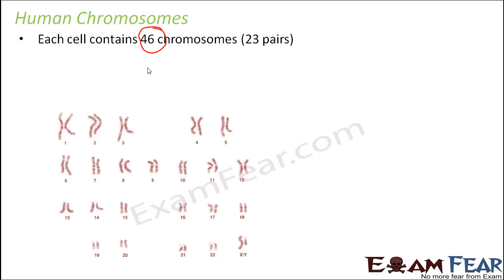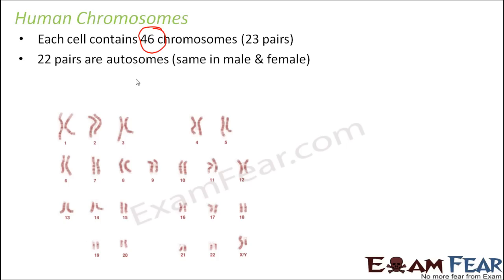Out of these 46 chromosomes, 44 of them are autosomes — that is, 22 pairs are autosomes. So chromosomes 1 through 22, as you see, they are all autosomes. What is the meaning of autosomes? That means they are similar in a male and a female. So all these chromosomes will be the same whether the gender is a male or a female — it doesn't matter.